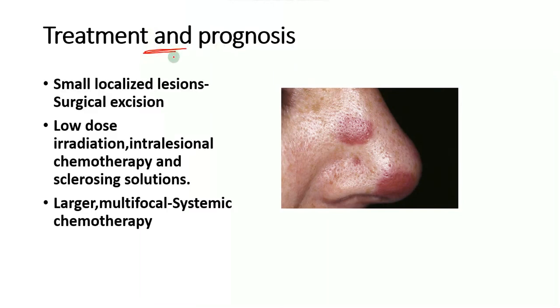A quick note about treatment and prognosis: in small localized lesions, surgical excision is indicated plus low-dose irradiation and chemotherapy. In larger lesions, systemic chemotherapy is indicated.